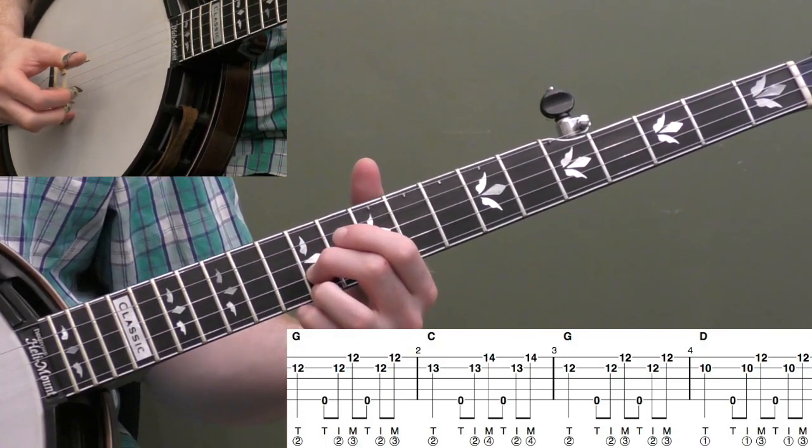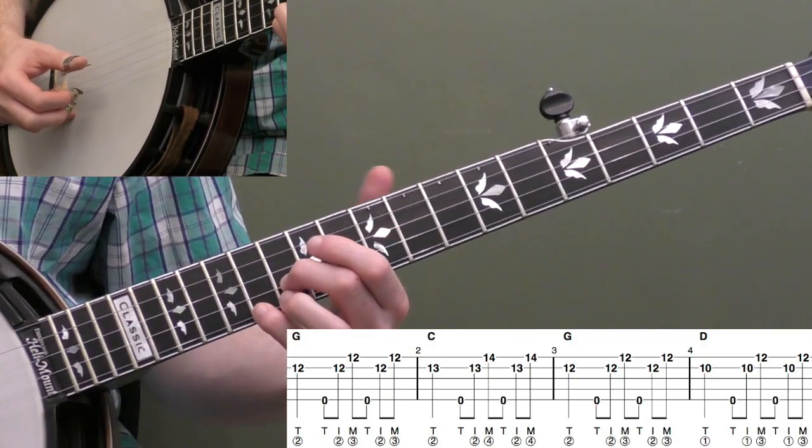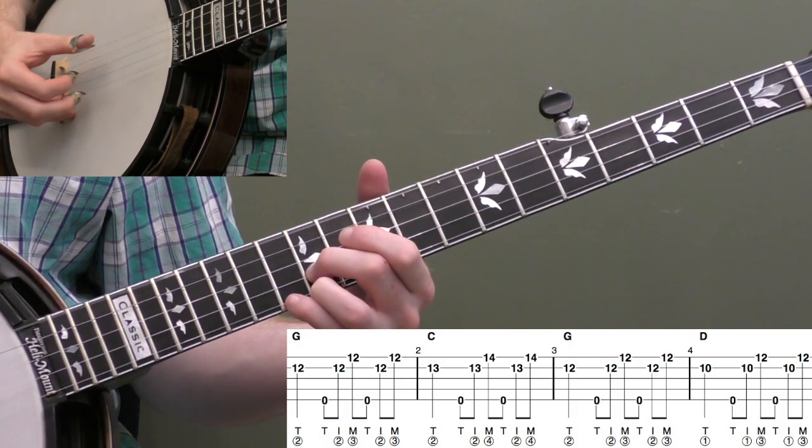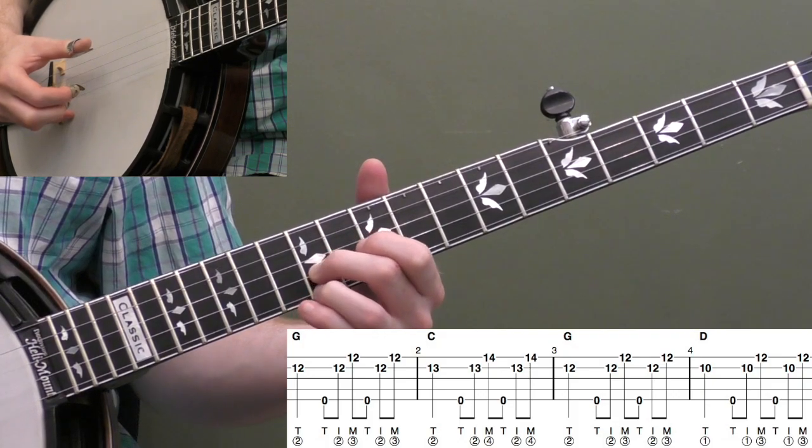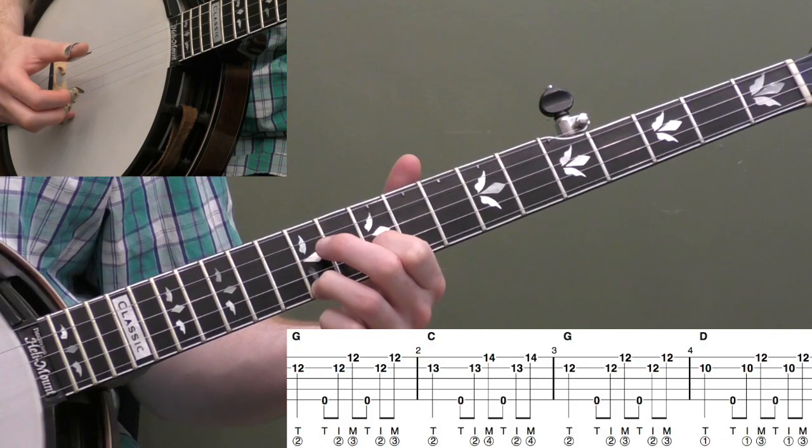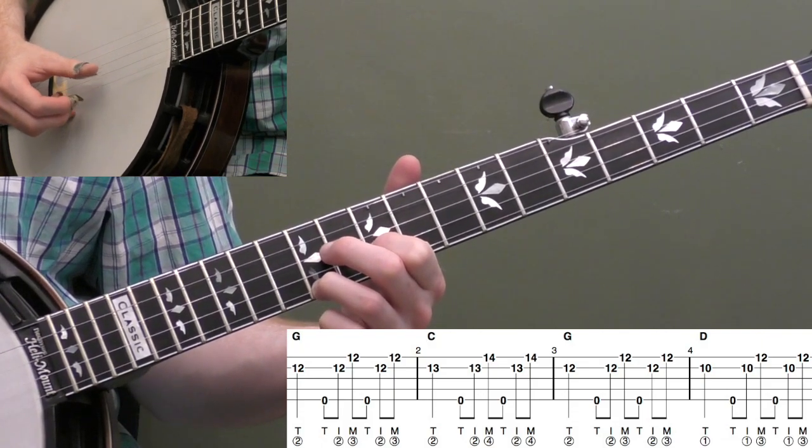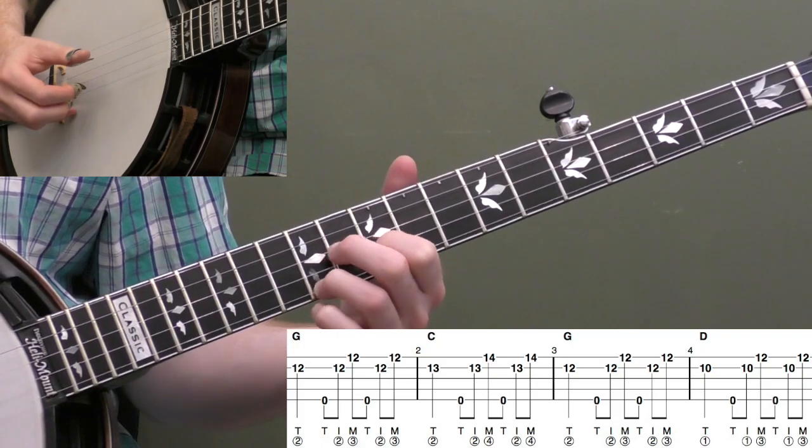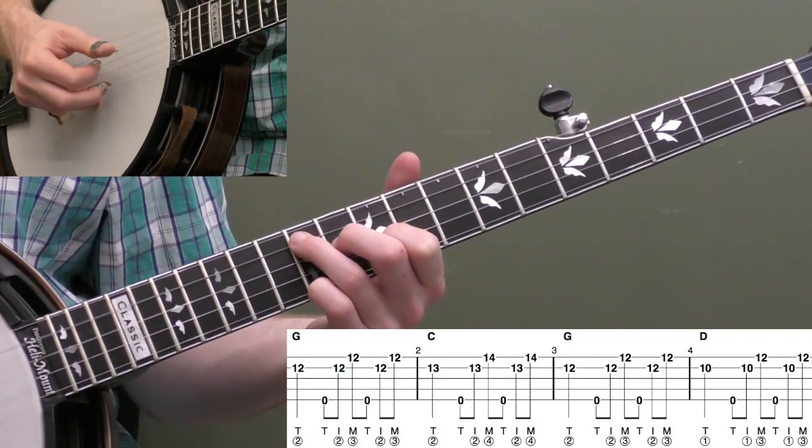For measure three we're going to go back to that twelve and twelve position, so slide your second finger back down, put your third finger back down and do that same roll. Then for measure four we're going to keep your third finger where it is, put our first finger down on the tenth fret and do that same roll. That's like a D chord. We're basically just working out of this shape.